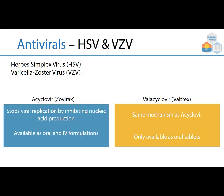For HSV and VZV — herpes simplex virus and varicella zoster virus — acyclovir and valacyclovir are used. Acyclovir stops viral replication by inhibiting nucleic acid production and is available as oral and IV formulations. Valacyclovir has the same mechanism as acyclovir but is only available as oral tablets, so it depends on how you need to deliver it to the patient.